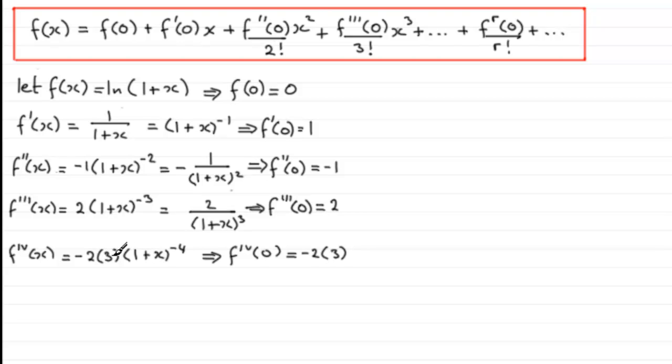Now, when we get these values, if we just put this back into our function up here, the Maclaurin series, then you'll see what actually happens. We've got natural log of 1 plus x is equal to the first term, f(0), well, that's 0, so that's gone. So we go to this term, f'(0). f'(0) was 1, so you've just got 1x, or simply x.